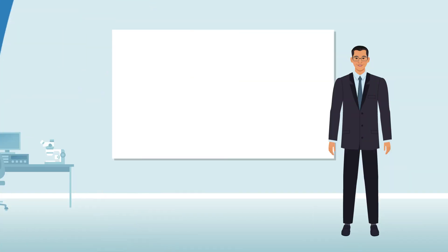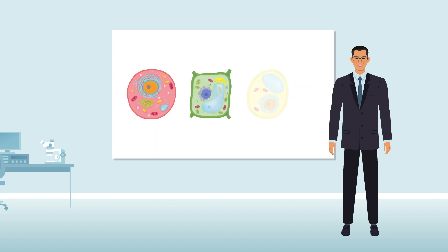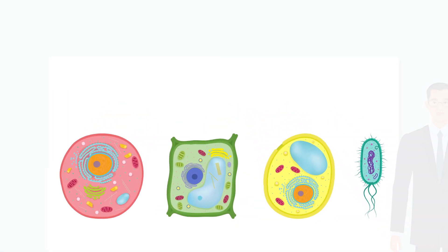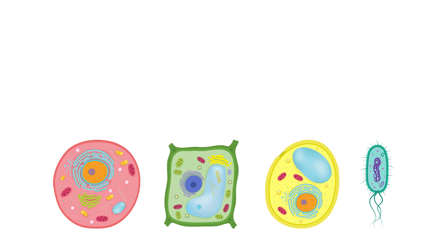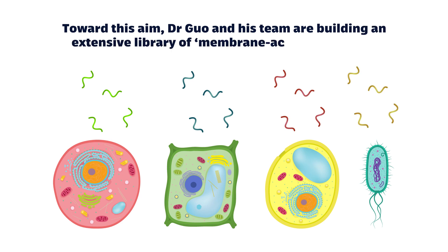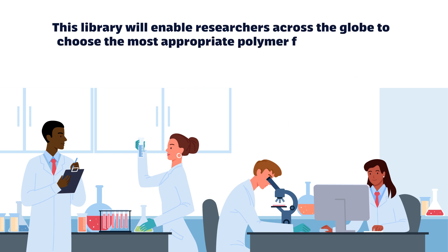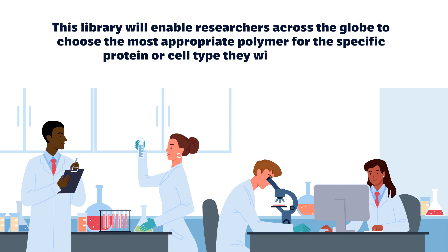Dr. Gua and his team use a number of different polymers that can form nanoparticles and encapsulate membrane components for analysis. Indeed, the significant differences in cell membranes between animals, plants, fungi, and bacteria mean that it is likely impossible to obtain a single polymer that would protect the structures of all membrane proteins and lipids. In fact, each type of membrane protein may need a specific set of polymers to aid their extraction. Toward this aim, Dr. Gua and his team are building an extensive library of membrane-active polymers. This library will enable researchers across the globe to choose the most appropriate polymer for the specific protein or cell type they wish to study.